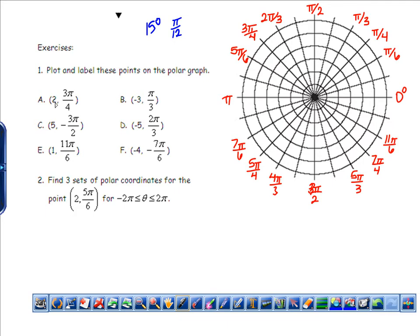Okay, so this says plot and label these points. So (2, 3π/4). What I like to do first is to locate the angle, and then I go two units away from the pole. And let's label that with an A. Okay, so next we have B. This is (-3, π/3). So the first thing I'm going to do is locate π/3. And I'm going to go three units away, but in the opposite direction, which is really going to put me at the same thing as (3, 4π/3).